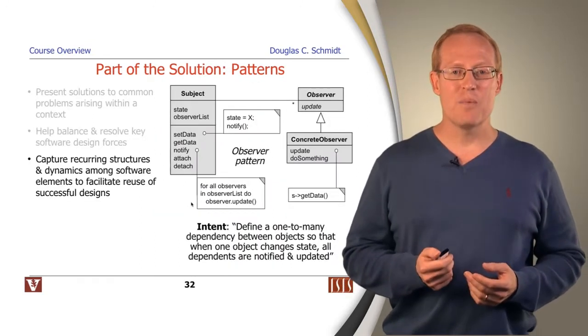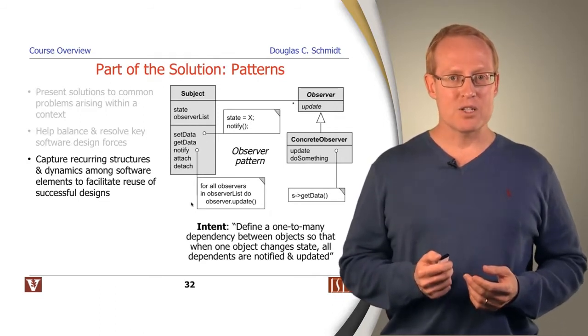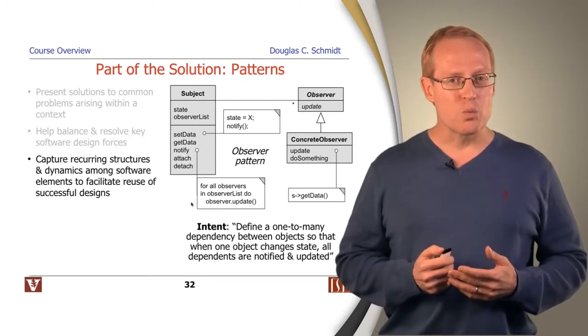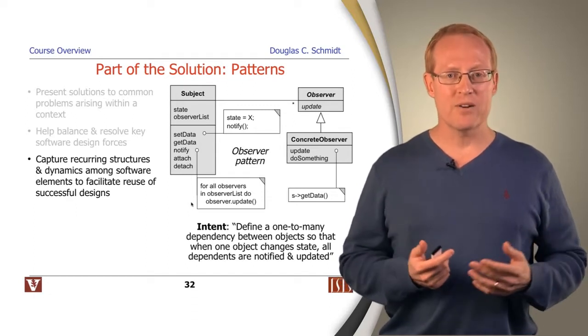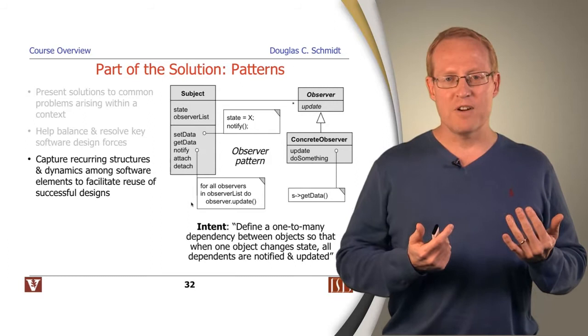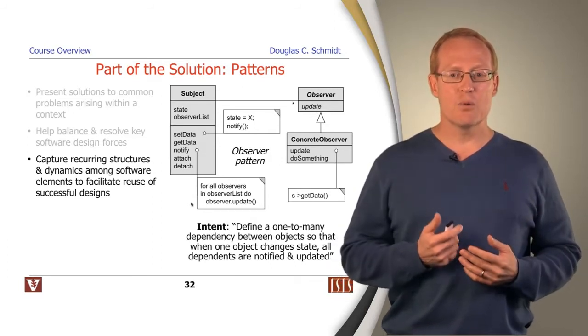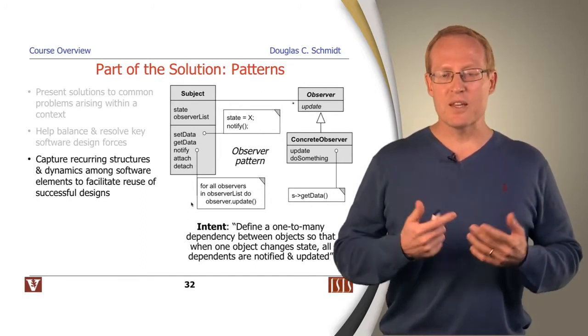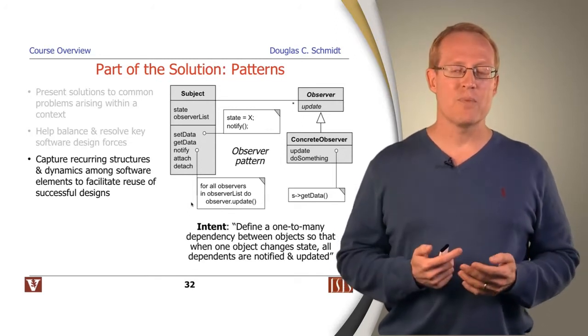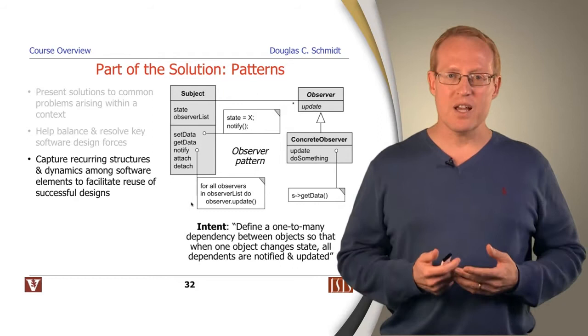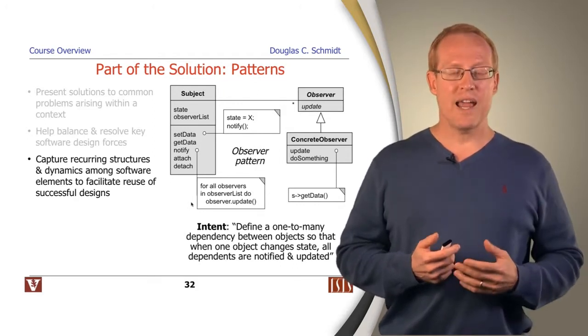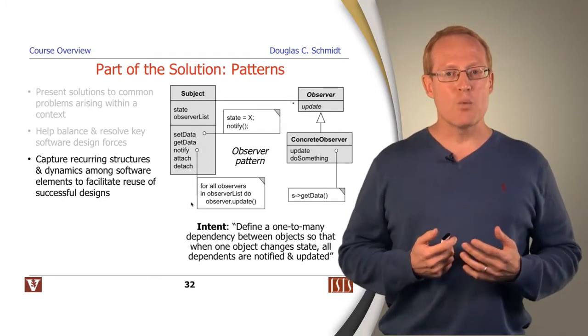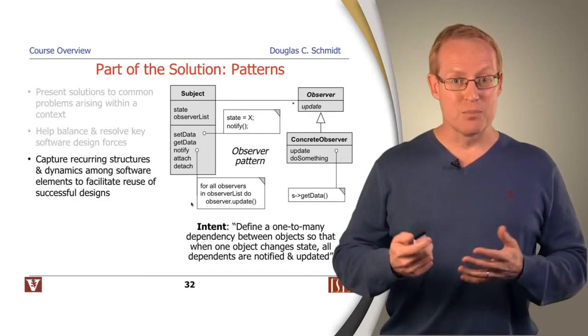Patterns also help by capturing recurring structures and dynamics among software elements to facilitate reuse of successful designs. For example, one pattern we'll look at a number of times throughout this course is called the observer pattern. This pattern helps to define a one-to-many dependency between objects so that when one object changes, all its dependents are notified and updated. We'll see that there's other patterns related to this, things like publisher subscriber. This particular way of looking at software design helps to describe common structural roles and responsibilities of those roles, dynamic interactions and conventions in ways that people can learn from and apply if they're trying to solve similar problems.